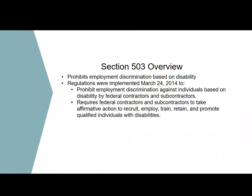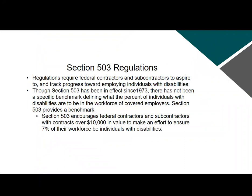Section 503 requires federal contractors and subcontractors to take affirmative action to recruit, employ, train, retain, and promote qualified individuals with disabilities. It requires federal contractors and subcontractors to aspire to and track progress towards employing individuals with disabilities. Though Section 503 has been effective since 1973, there has not been a specific benchmark defining what percent of individuals with disabilities should be in the workforce of covered employers — Section 503 now provides that benchmark.